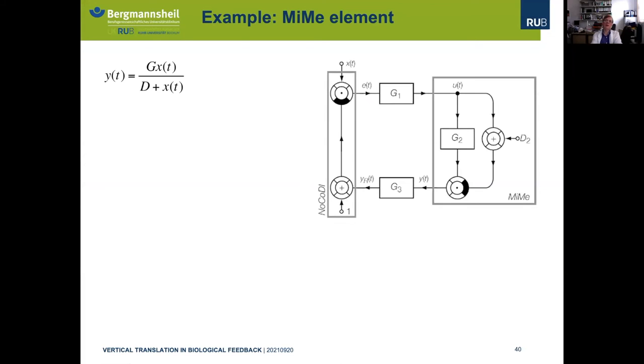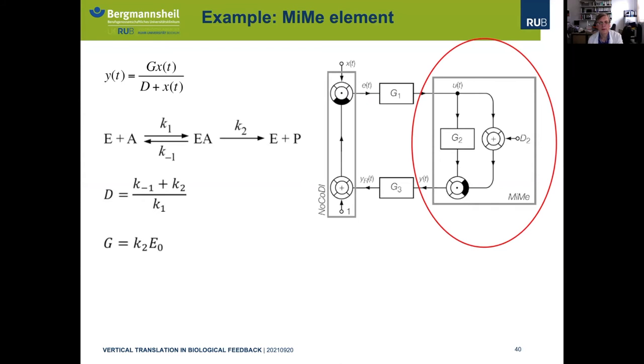I want to show an example of how we can do this. We want to concentrate in this feedback loop on this MIME element for illustrative purposes. We can describe this with a well-known equation, and this represents this enzymatic process which you see here on the left. What is important is that we can express these two constants, G and D, which describe the shape of the Michaelis-Menten kinetics, also in terms of rate constants k-1, k2, and k1. So we have the possibility to simulate the behavior of the feedback loop on the level of single molecules.